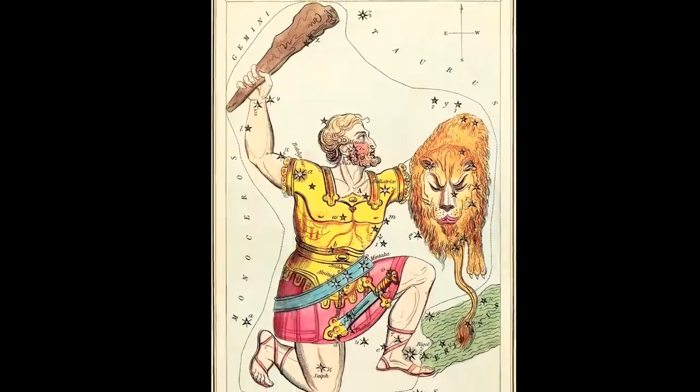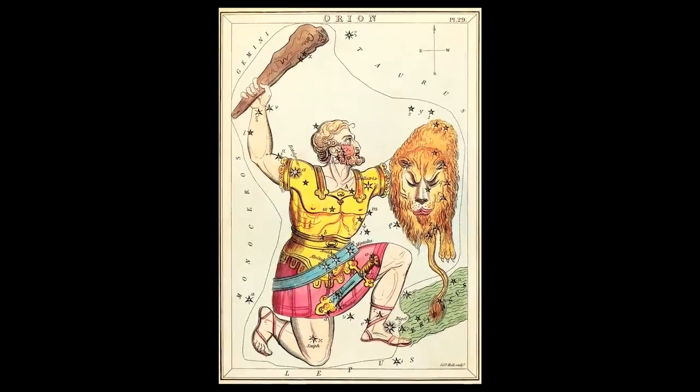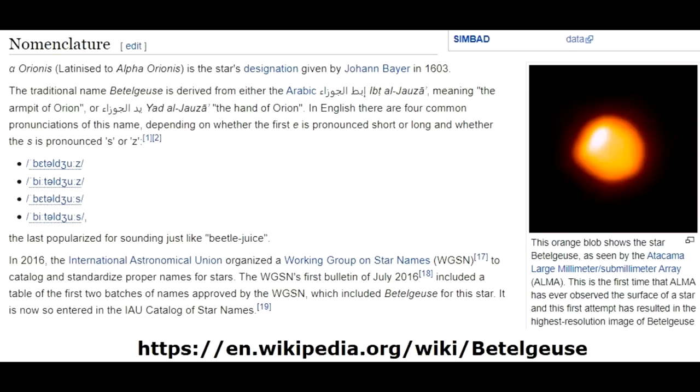The name actually originates in Arabic and as one of the brightest stars in the sky, part of the Orion constellation, it was given a name based upon its perceived part of the great mythical hunter. So it was apparently, possibly, the armpit of Orion, Ibit al-Jeeza or it was possibly Yid al-Jeeza, Hand of Orion. These names were given by Arabic scholars while Europe was in the Dark Ages and then during the Renaissance, when learning became important again, the Arabic knowledge of stars was brought back to Europe and transcribed by people that didn't speak Arabic very well. So we end up with Betelgeuse or Betelgeuse or whatever.